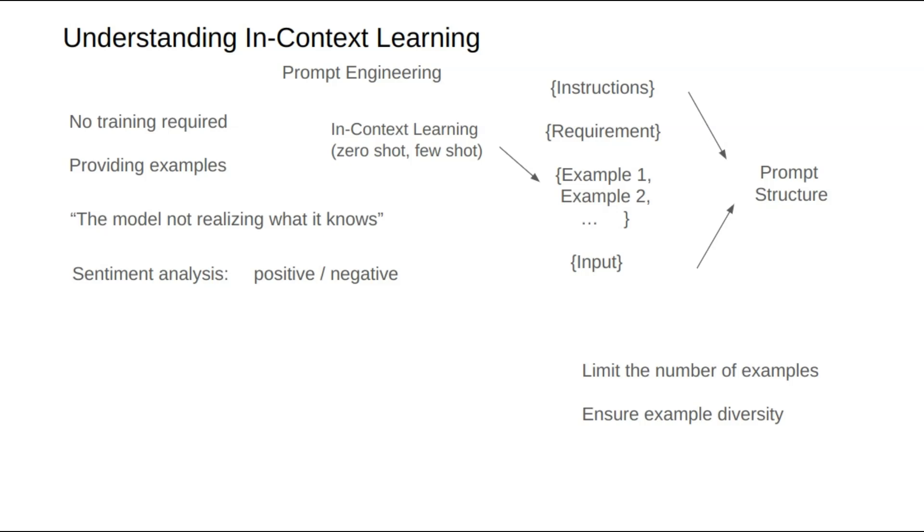causing the model to lean toward one outcome over the other. Similarly, if the task involves intent recognition with 20 to 30 intents, include examples covering all intents to maintain diversity.